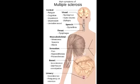What are the classic clinical presentations observed in multiple sclerosis? The classic clinical presentation includes nystagmus, intention tremors, scanning speech, and bilateral internuclear ophthalmoplegia.